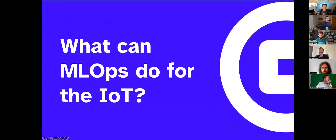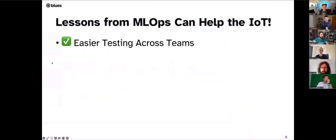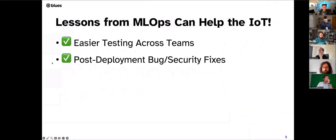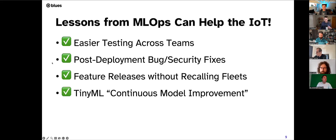Based on this newfound knowledge of ML Ops, what does this mean for IoT? It's going to become easier to test across teams as everyone can tap into the same development pipeline. It's easier to fix bugs and perform security updates after releasing a solution in the wild. You don't have to perform a massive fleet recall if a critical update or new features need to be released. Along with CI and CD, we now get continuous model improvement — or CMI — in the TinyML space. TinyML is machine learning on constrained devices, which is a core piece of what we're talking about today.